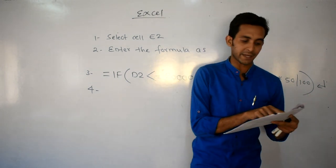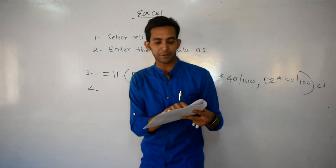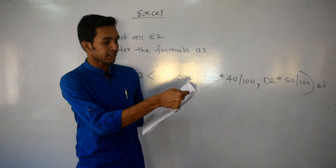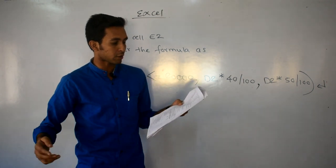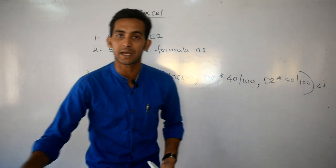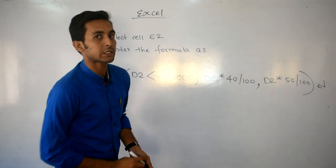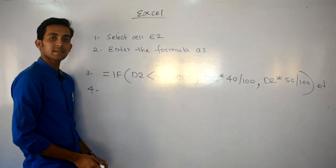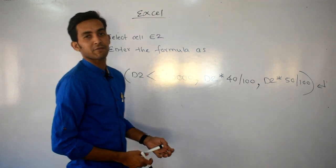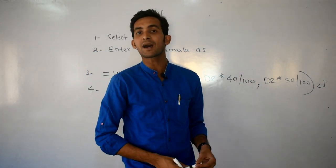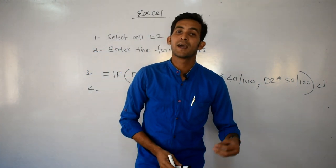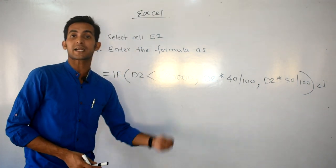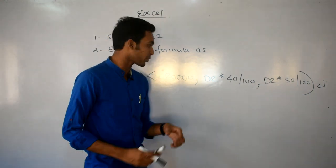Question में 10 employees हैं — Jatin, Mukesh, Dipika, Atul, Sheetal तक — जिनकी salary like 15,000 दी गई है। सबके लिए बार-बार formula put करना नहीं होगा — Excel का use इसीलिए करते हैं ताकि काम shortcut में हो जाए।